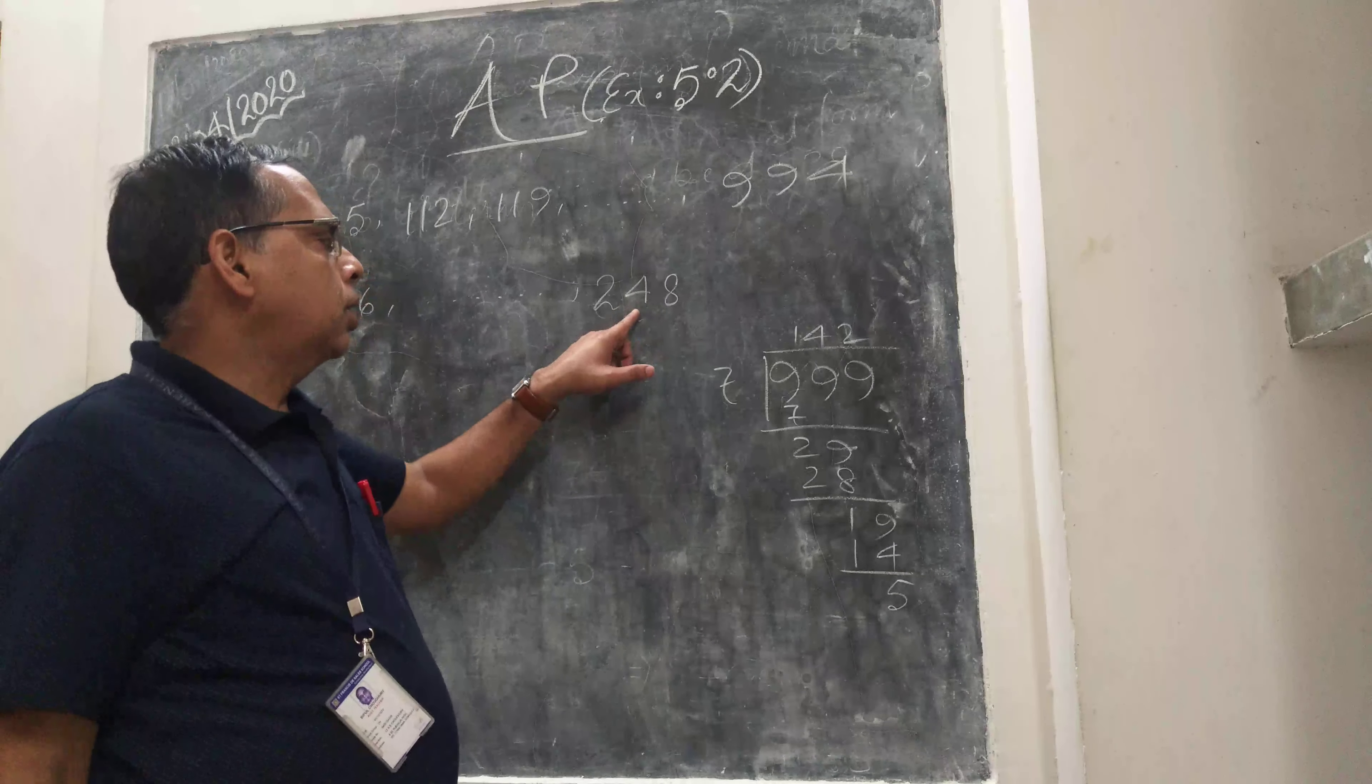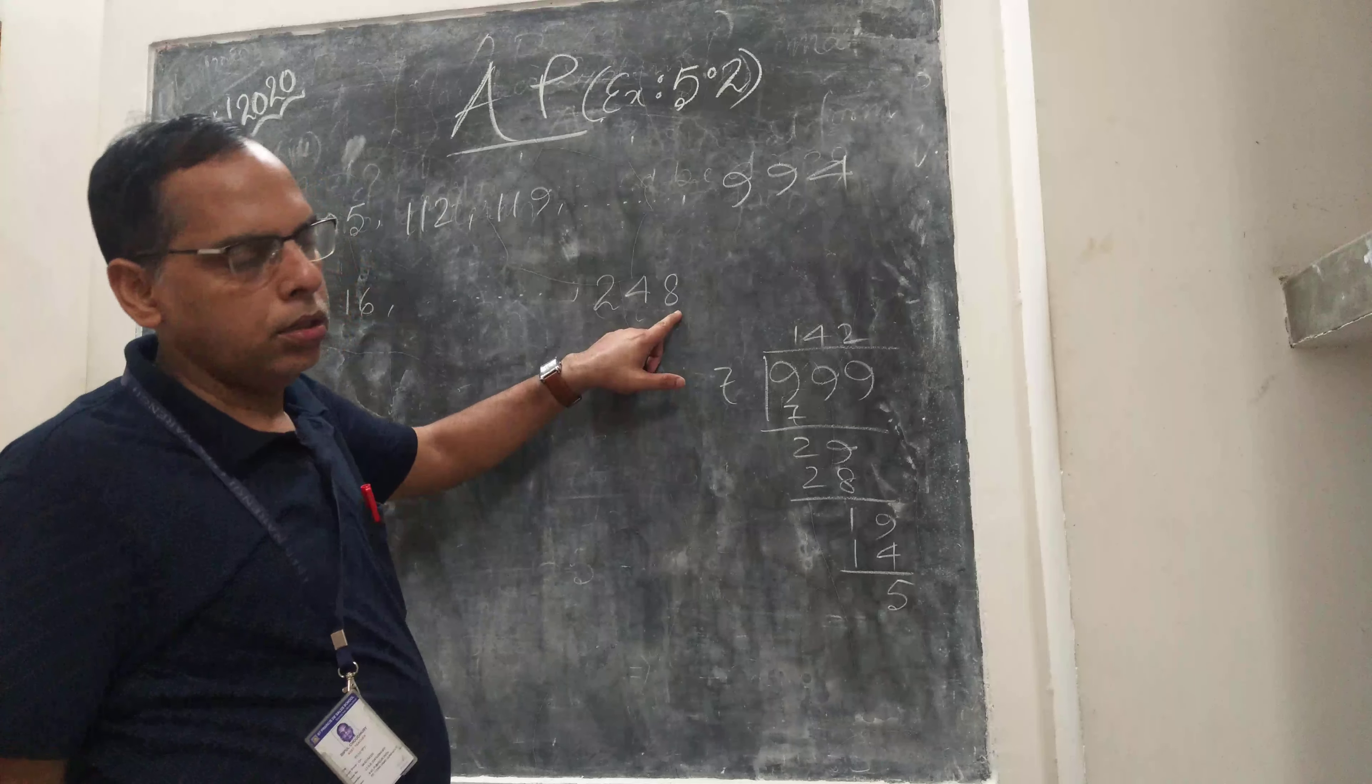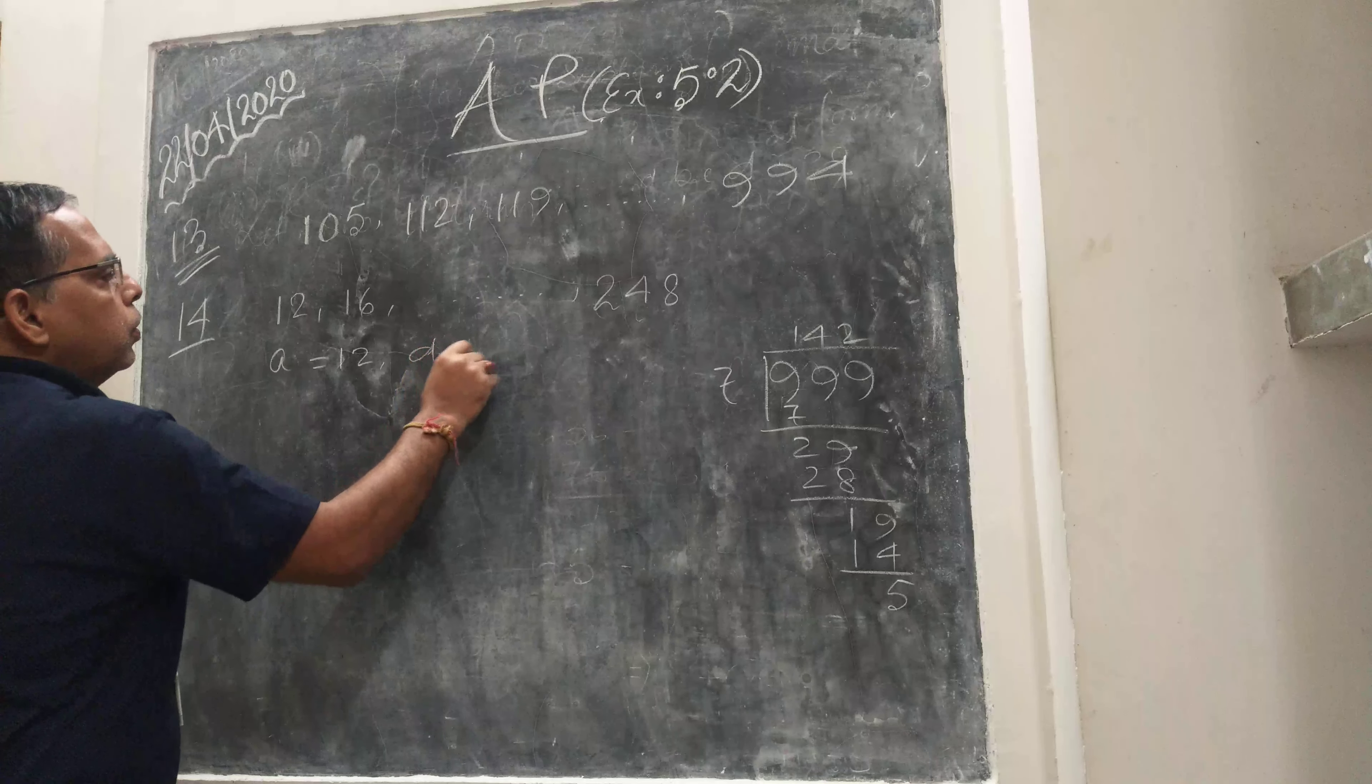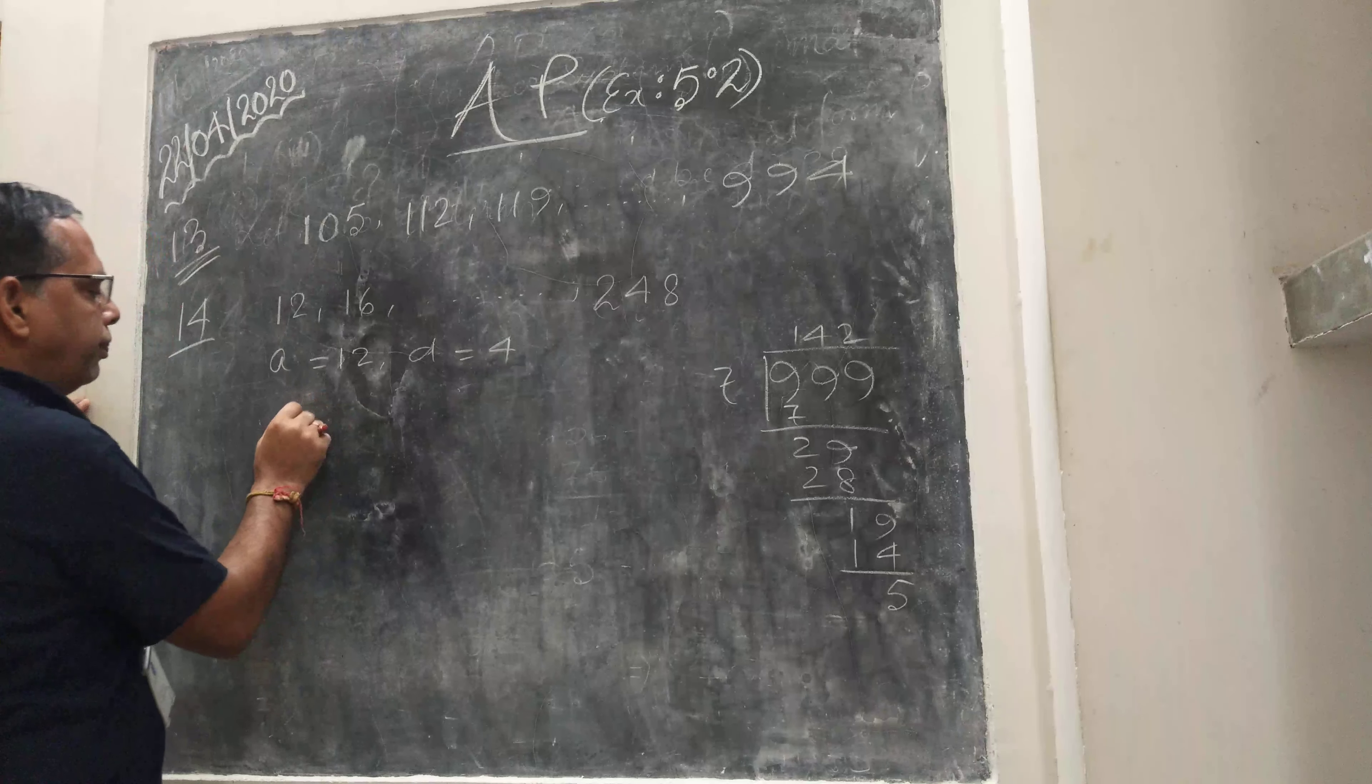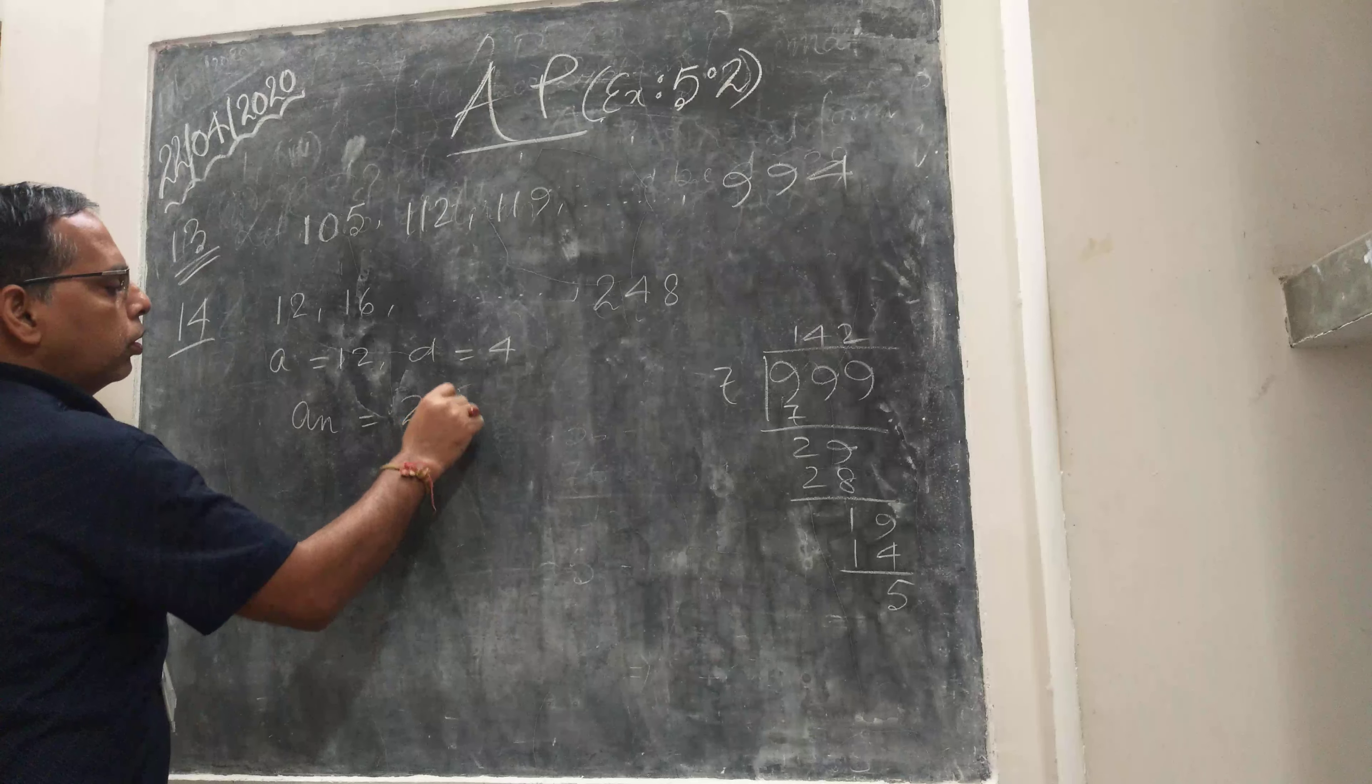So you see A equals 12, D equals 4 because it's a multiple of 4, and AN equals 248.